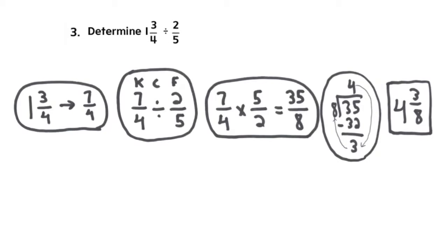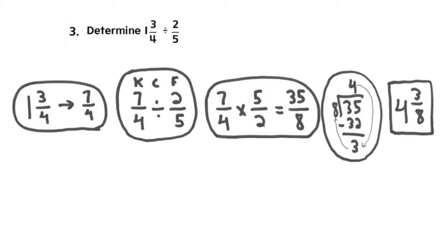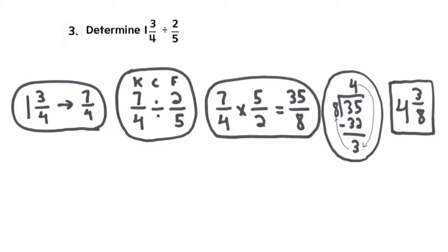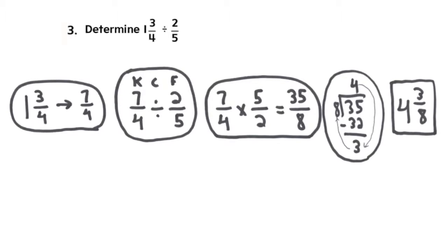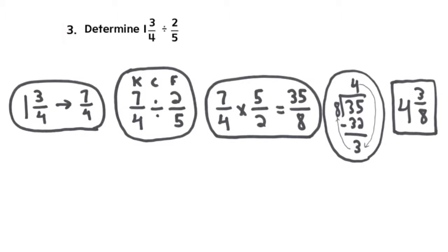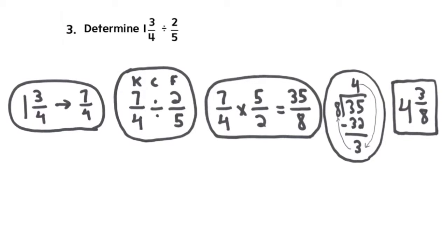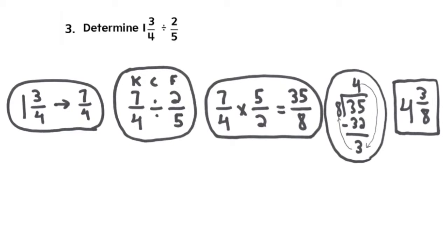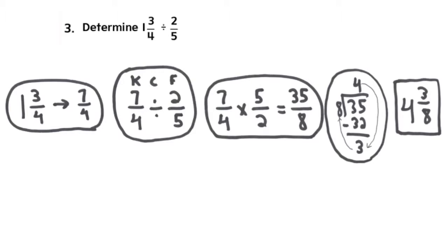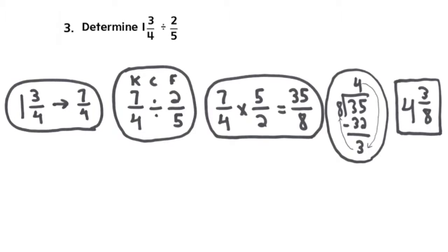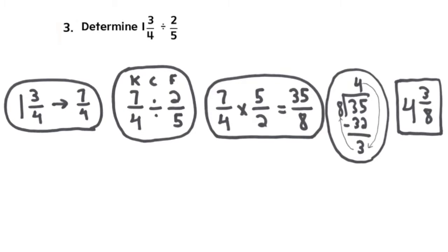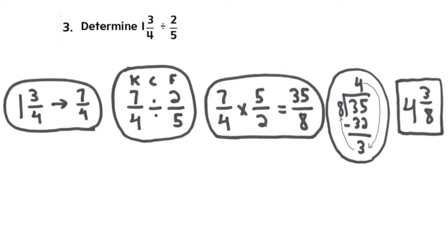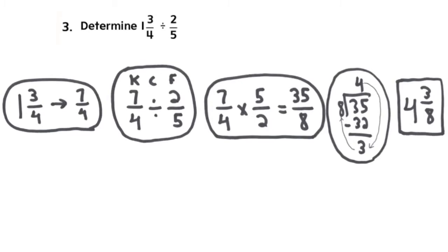And it becomes 7 fourths times 5 halves. If you use the steps for multiplying fractions, it gives you a product of 35 over 8. And here you'll notice that we're using several different steps from several lessons, so just make sure you're keeping up. And if at any point you need to go back and revisit an old lesson, feel free to do so. So in our final answer, you divide once and go clockwise, and you end up with 4 and 3 eighths.